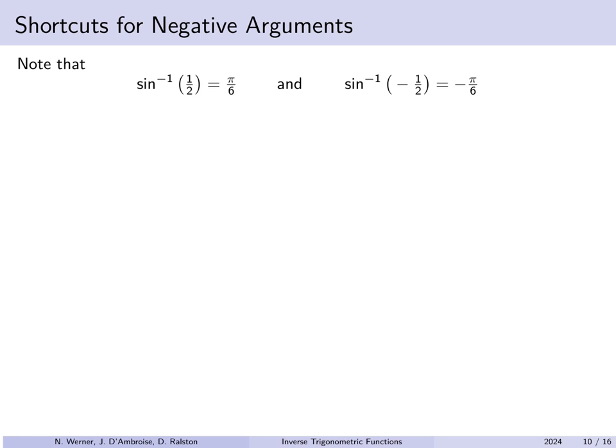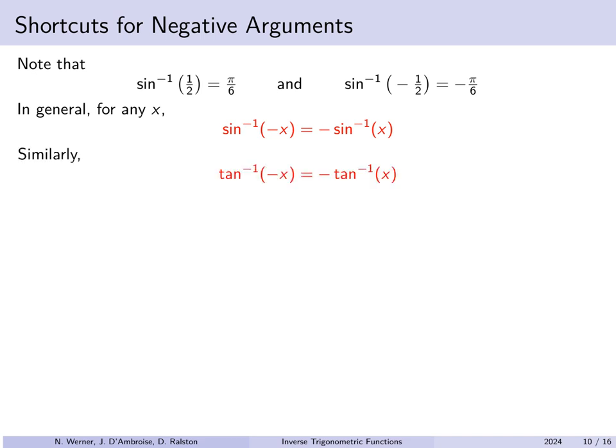Observe that arcsine of 1/2 is pi over 6 and arcsine of minus 1/2 is minus pi over 6. In general, for any value, the arcsine of negative x will be negative arcsine of x. Similarly, you can factor out a minus sign from the arc tangent function.